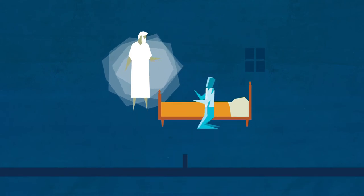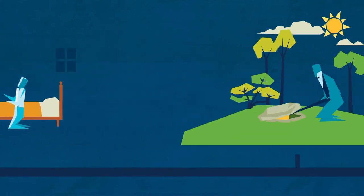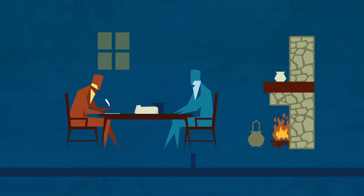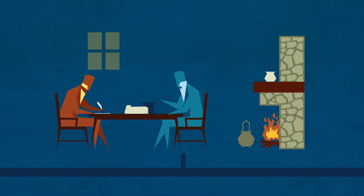Three years after the first vision, an angel visited Joseph and instructed him to unearth an ancient record hidden in a nearby hill, which Joseph translated by the power of God. This ancient record was the Book of Mormon, another testament of Jesus Christ.